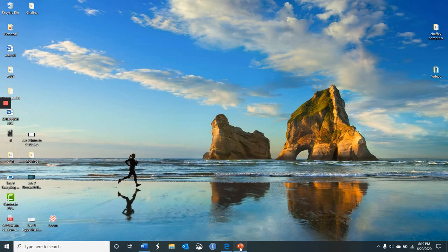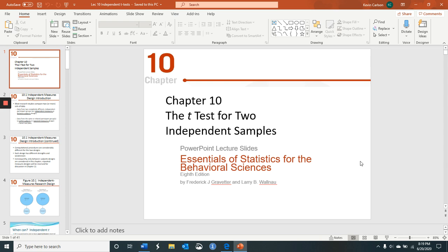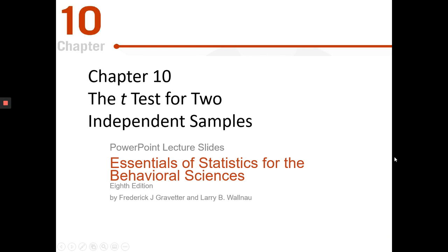Hi everybody. This is the next lecture. I think the last lecture was a little bit weird in the sense that we didn't really do any calculations. It just served as a bridge from the Z-test to the T-test. But now we're really getting into statistics that we're actually going to calculate with numbers. And unlike the one-sample Z-test, it is a test that we do in real social science. So we are actually now getting into the real stuff, not just the lead-ins to the real stuff.